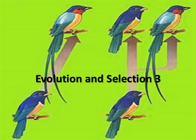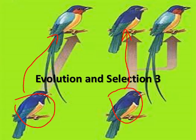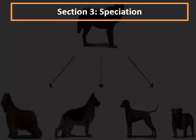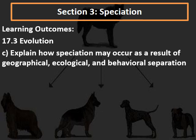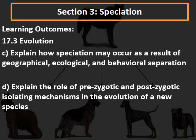Welcome to evolution and selection part 3. Here we'll be talking about speciation — how a starting species changes over time and becomes a different species, or how it stays the same while a new species branches off. We'll look at the mechanisms behind speciation: geographical, ecological, and behavioral factors. We'll also examine prezygotic and postzygotic isolation mechanisms.